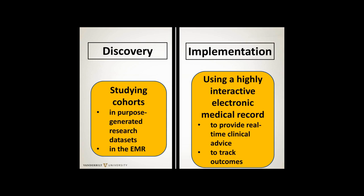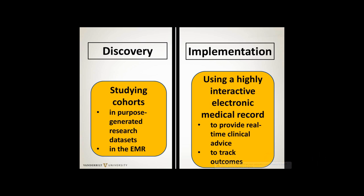So John raised an interesting point, which I think will be a recurrent theme and actually is a recurrent discussion area within eMERGE. As I thought about what I wanted to say, it is a balance between this idea of discovery - discovery can be across the EMR, or in other kinds of cohorts - and then implementation in the EMR. Implementation is not simply a matter of dumping a bunch of genotypes into the EMR and letting magic happen. There's a very complex process that we are just beginning to understand.